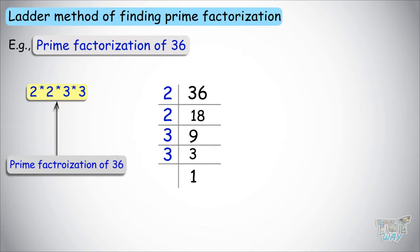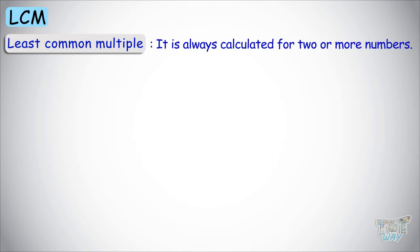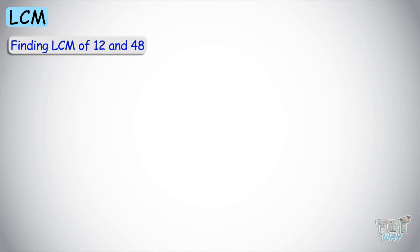So we have revised what are factors, multiples, what is factorization, and what is prime factorization, including the ladder method of finding prime factorization. Now let's learn about the LCM, the least common multiple. It is always calculated for 2 or more numbers. For example, let's find the LCM of 12 and 48.